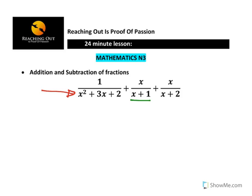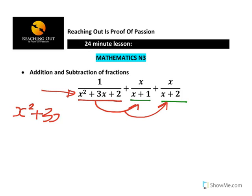These look simplified, but there is something interesting about x squared plus 3x plus 2. Let us first factorize it and see what we get, because somehow you will discover that it is linked to the other two denominators. To factorize x squared plus 3x plus 2, I am going to use the product-sum method.